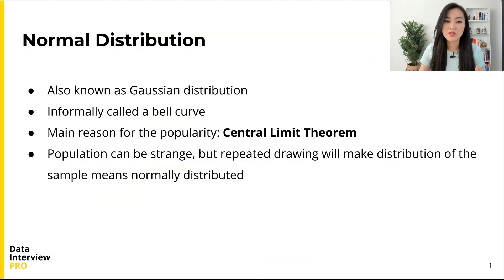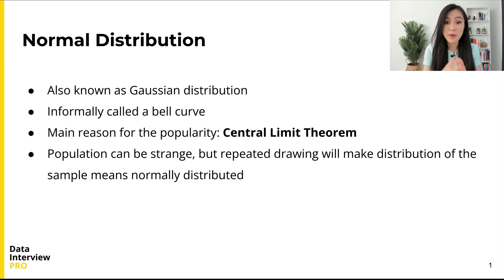I hope this video serves as a refresher when you review your probability knowledge — or even better, you can learn a few new things. Without further ado, let's get started with the normal distribution, which is by far the most common distribution I have seen in data science interviews. The normal distribution, sometimes referred to as a Gaussian distribution, is a very common distribution for continuous data. Given its resemblance to a bell, it is also known as a bell curve.